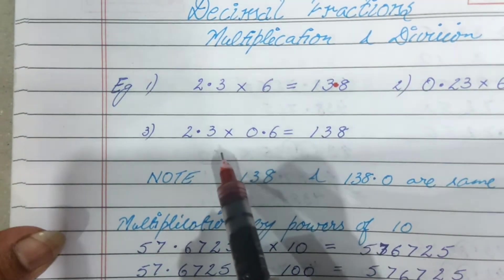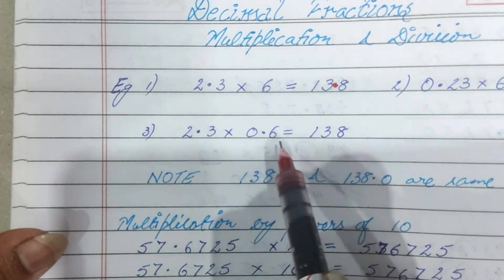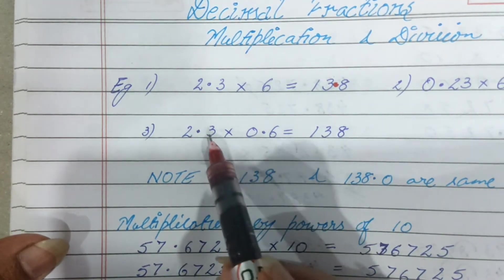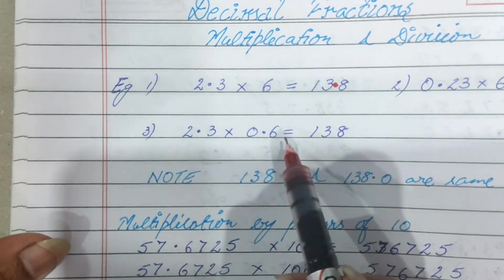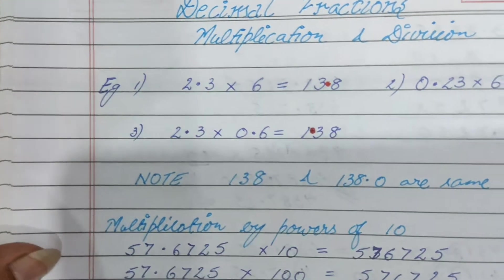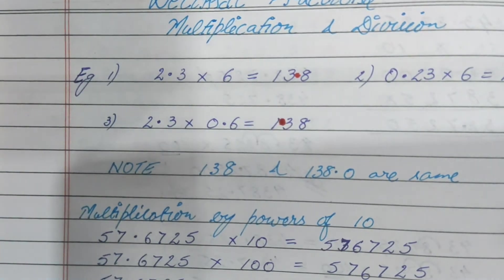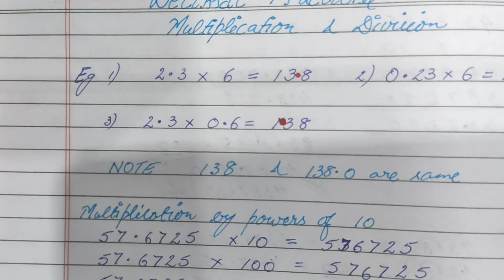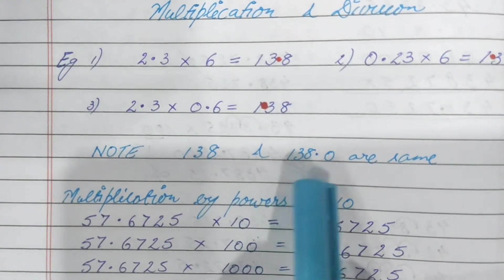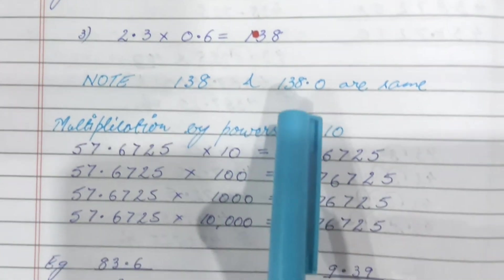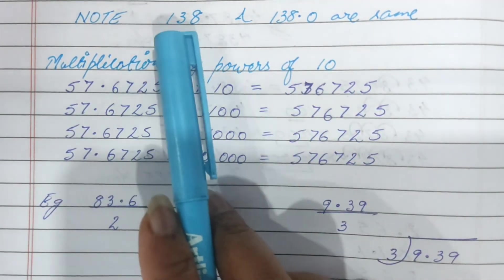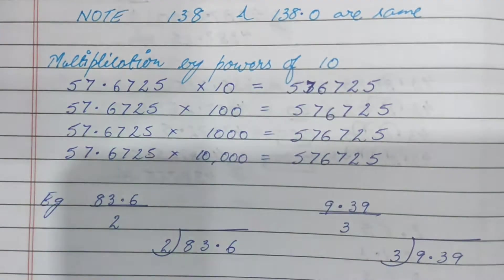See the third one. In both numbers we have a decimal, so you do the normal multiplication. Count the number of decimal places — 1 here and 1 here makes 2. Count 2 places and then put the decimal. There is a note: 138 and 138.0 are the same. That means if after the decimal we put a 0, it will not change the number.